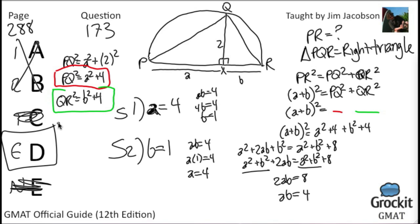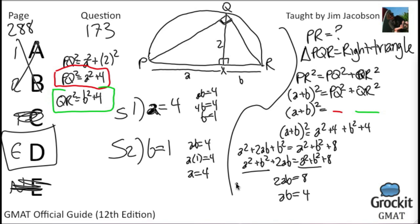This is a question where recognizing that angle PQR is a right angle — because it's inscribed in a semicircle — is essential. Without that insight, most people would just combine both statements and possibly still get it wrong. Every once in a while the GMAT throws one at you where there's just no other way than seeing the key geometric property.